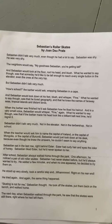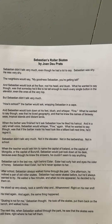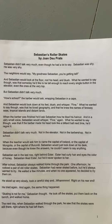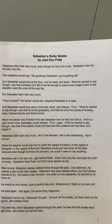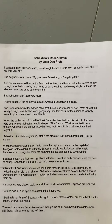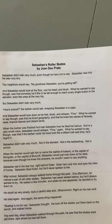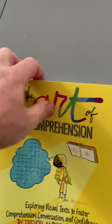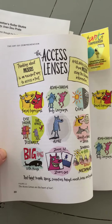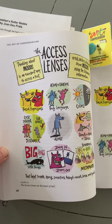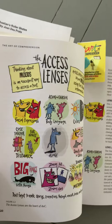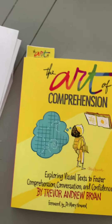And so the access lenses can help students to notice these details and think about and talk about them. But the access lenses also help students when they craft their own narratives — it helps them think about how they're going to show their character's mood. So the access lenses are a really valuable tool to help students when they think about texts, whether they're visual or written, and when they craft their own texts, whether they're visual or written. Hope this helps. Reach out with any questions.